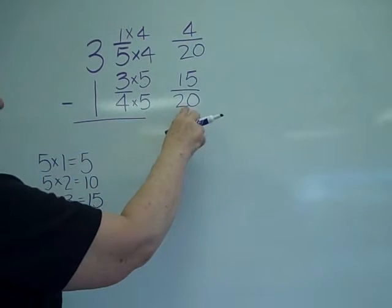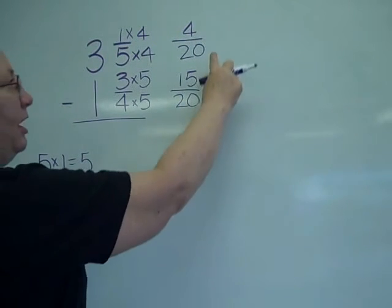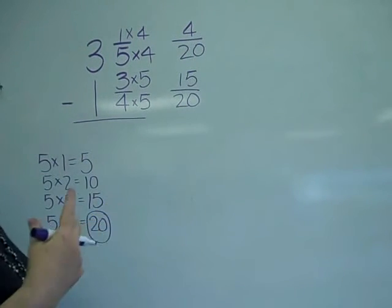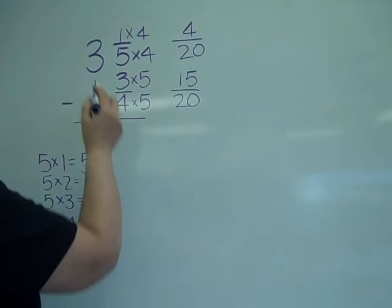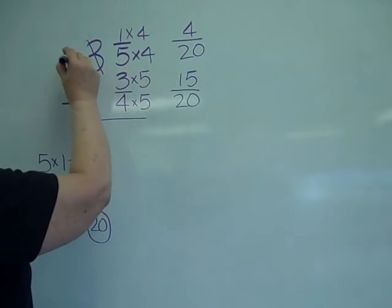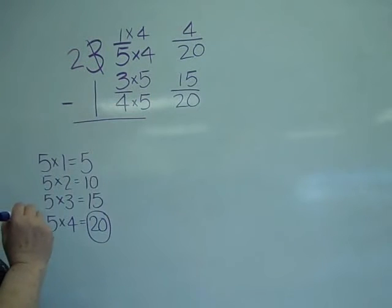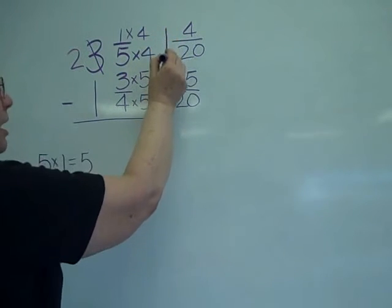Now notice, I cannot subtract fifteen from four, so I'm going to have to do some borrowing. I'm going to borrow from the three, makes that a two, and I'm going to borrow the one.